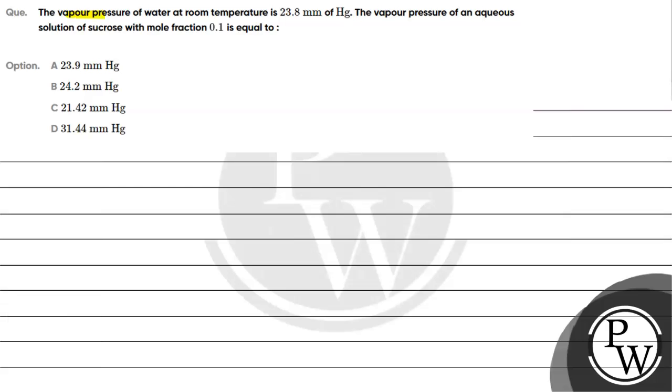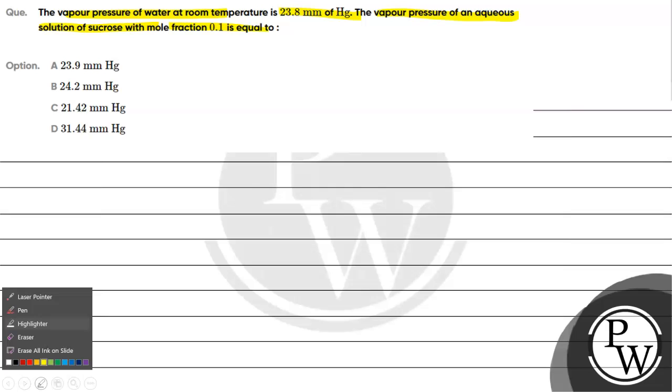Let's read this question. The vapor pressure of water at room temperature is 23.8 mm of Hg. The vapor pressure of an aqueous solution of sucrose with mole fraction 0.1 is equal to: Option A, 23.9 mm Hg.